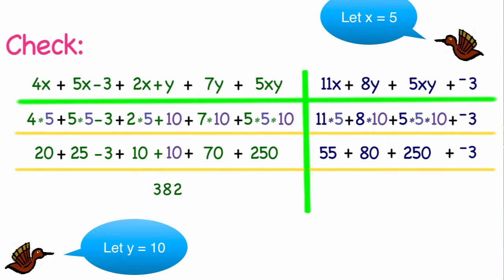Now let's compare that with our simplified version. That would be 55 + 80, which is 135. When we add 250 to that, we get 385. And when we add negative 3, we get 382. Since both the initial and the simplified part of the expression ended up with the answer, 382, the problem checks.